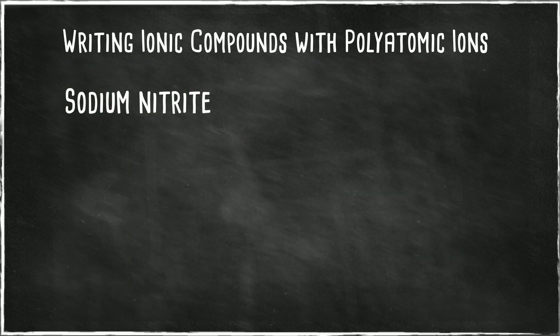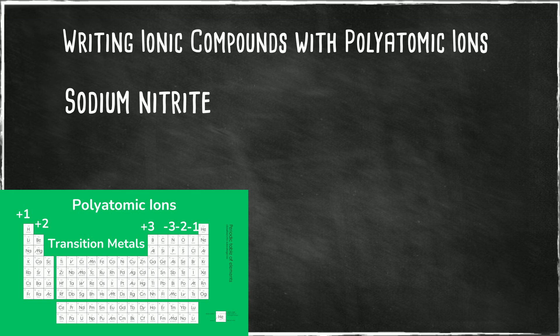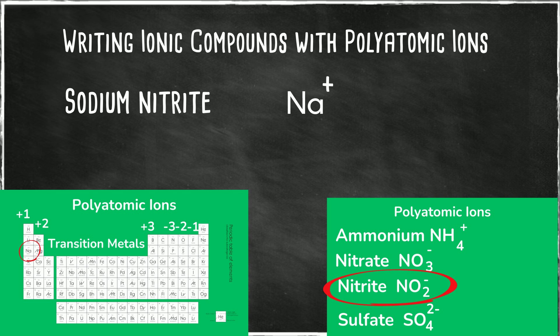Up first, let's look at sodium nitrite. Let's begin and figure out what the charge is for sodium, and it is in group 1, so it will have a plus 1 charge. Now nitrite is a polyatomic ion and I'm going to look on my list and it has a negative 1 charge.